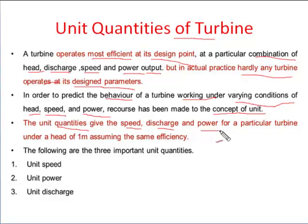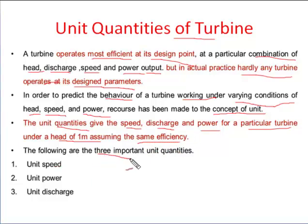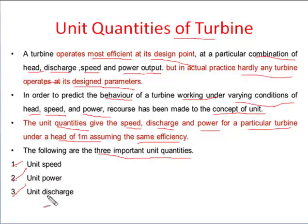The unit quantities give the speed, discharge, and power for a particular turbine under a head of one meter, assuming the same efficiency. The three important unit quantities are: first, unit speed; second, unit power; third, unit discharge.